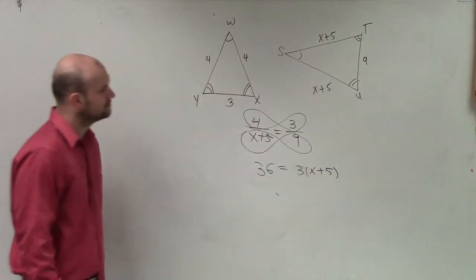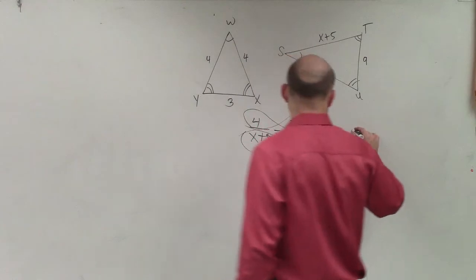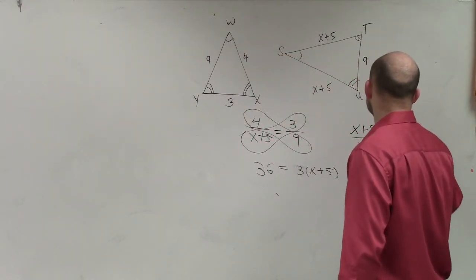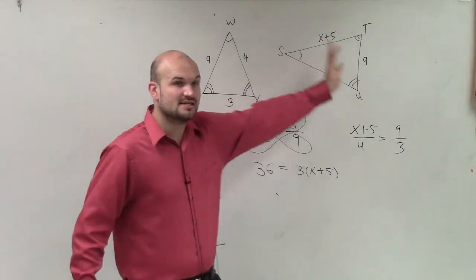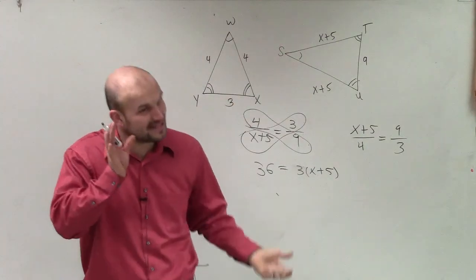Wouldn't it be the same as 9 times 9? Mm-hmm. You could also write the proportion like this: x plus 5 over 4 equals 9 over 3. So you can go from this triangle to this triangle, or this triangle to this triangle, but you have to be consistent.